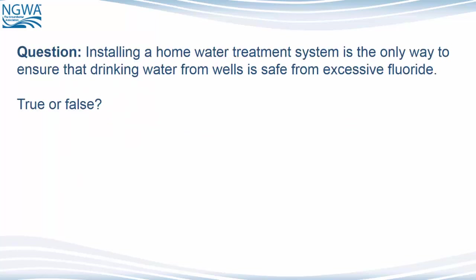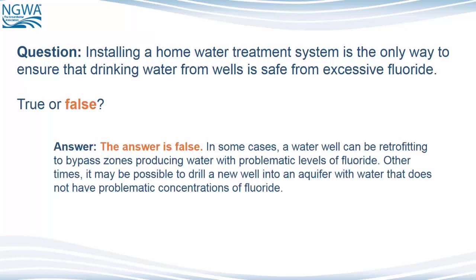Question: Installing a home water treatment system is the only way to ensure that drinking water from wells is safe from excessive fluoride. True or false? The answer is false. In some cases, a water well can be retrofitted to bypass zones producing water with problematic levels of fluoride. Other times, it may be possible to drill a new well into an aquifer with water that does not have problematic concentrations of fluoride.